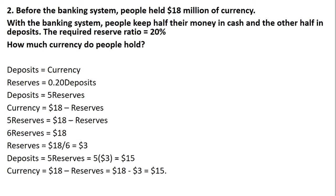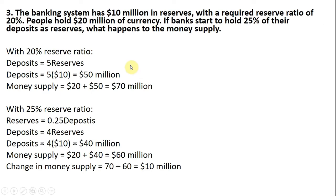Let's move on to the last question. The banking system has $10 million in reserves with a required reserve ratio of 20%. People hold $20 million of currency. If banks start to hold 25% of their deposits as reserves, what happens to the money supply?